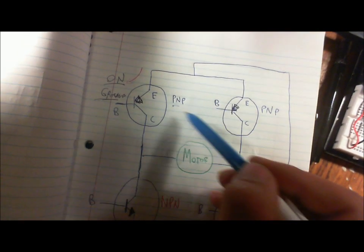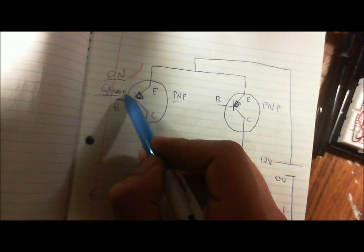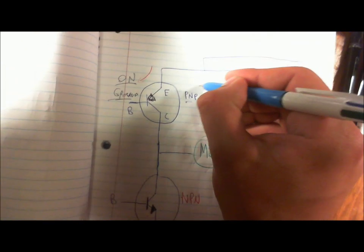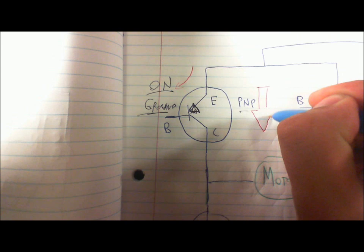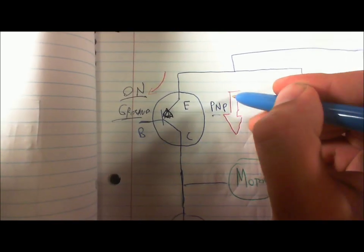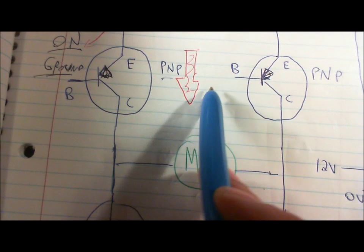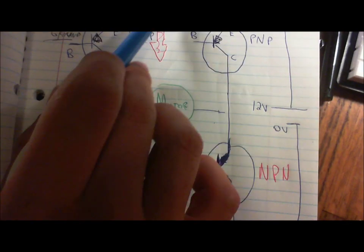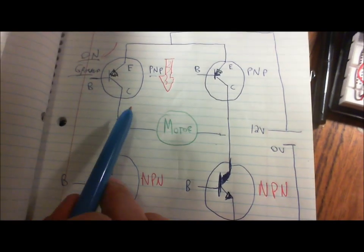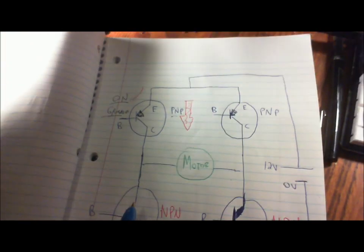So if I hook up a ground over here, I'm going to get some current flow. And that small current flow allows a larger current flow here. So this is the current that's going to be flowing through the circuit from the battery. The battery's voltage.